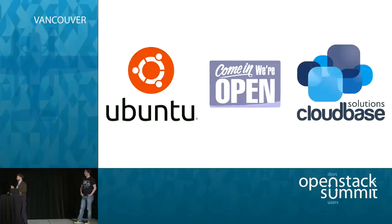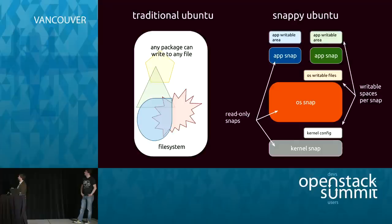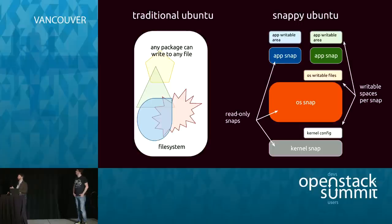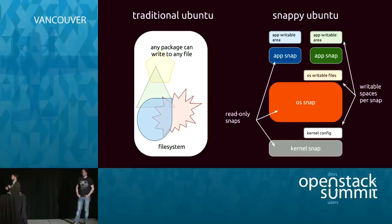If you need to modify information outside of your application, the developer docs will really question your motivation. But if there is a good reason, there's another level of snaps called frameworks. Frameworks are special snaps — they run privileged, as opposed to apps which do not run privileged. Frameworks are designed to mitigate shared resources. If there's a file or device that needs to be shared amongst multiple apps, we create a framework that apps are allowed to talk to. Maybe it's a shared file, a database, a USB device, or something like that.